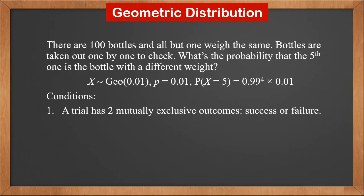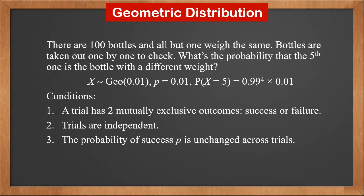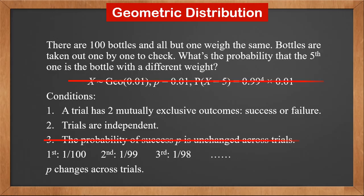We know the three conditions for geometric distribution. First, a trial has two mutually exclusive outcomes — success or failure. This is met. Second, trials are independent. This is also met. Third, p remains unchanged across trials. The probability of choosing the bottle with a different weight at the first try is 1 over 100. If the first one is not that bottle, we put it aside and the total becomes 99. So the probability at the second try becomes 1 over 99, and at the third try, 1 over 98. We can see that p changes across trials. Therefore, we cannot model this situation with geometric distribution.